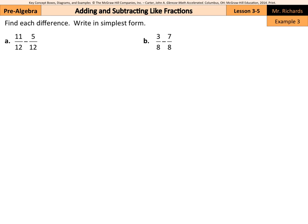11 twelfths minus 5 twelfths. Well, for this question, let's subtract those numerators. 11 minus 5 is 6 twelfths. And since we're looking to write each in simplest form, if we divide the top and bottom by the common factor of 6, this simplifies into 1 half.